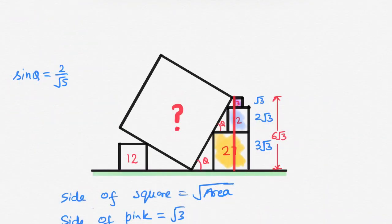Now, in this big yellow triangle, sin theta is 2 over root 5. If x be the side of this toppled square, then in this yellow triangle, sin theta equals to perpendicular over hypotenuse.